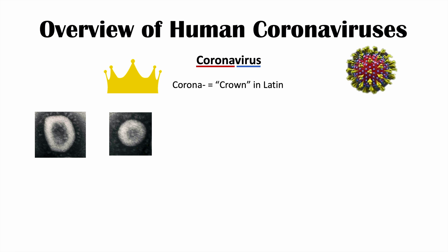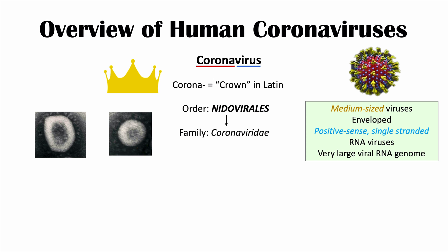Coronaviruses come from the order Nidovirales and they're in the family of viruses known as Coronaviridae. The coronaviruses themselves are medium-sized viruses. They are enveloped, and they are positive-sense single-stranded RNA viruses. If you were to look inside the virus, they actually have one single strand of RNA as their genetic code, and they actually have some of the largest RNA genomes known.